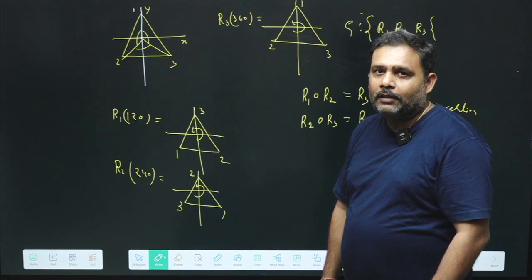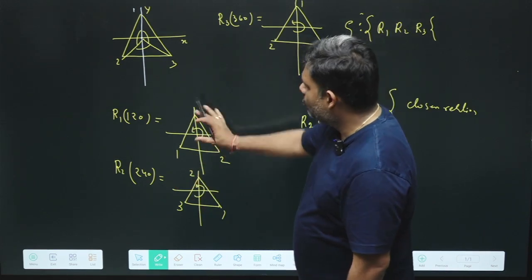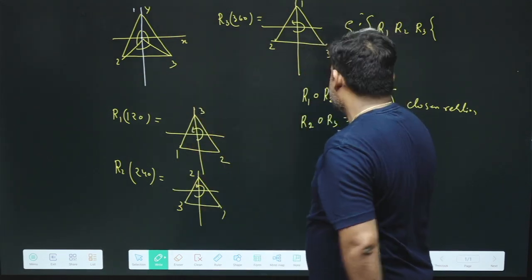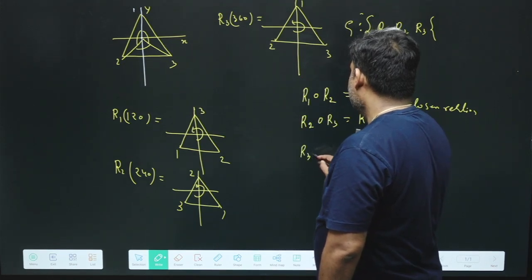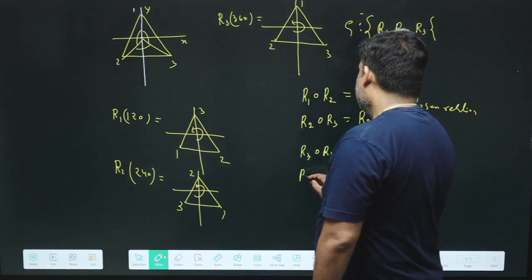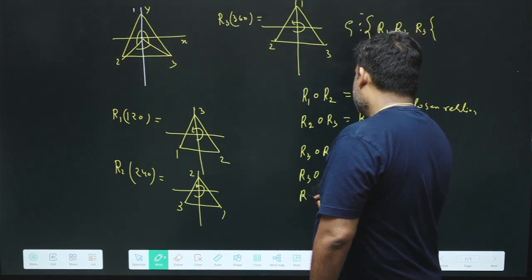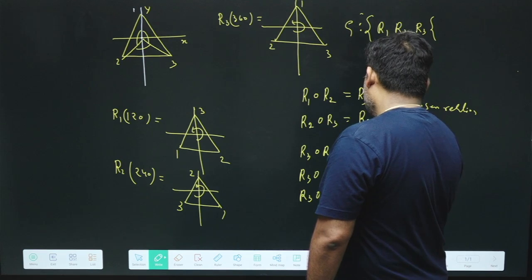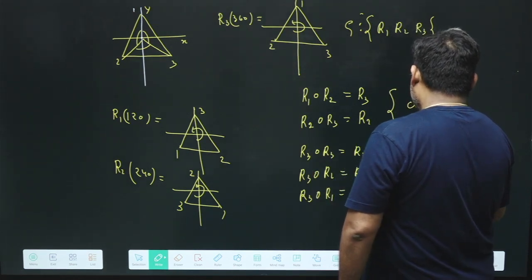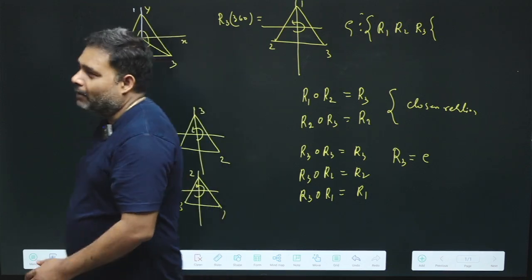Now let us check the existence of identity. If we take any figure and rotate it by 360 degrees, we get the same thing back. So R3 operated on R3 is R3, R3 operated on R2 is R2, and R3 operated on R1 is R1. Therefore R3 — rotation by 360 degrees — is identified as the identity element.